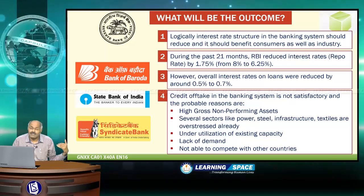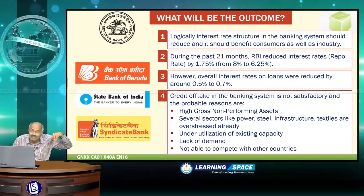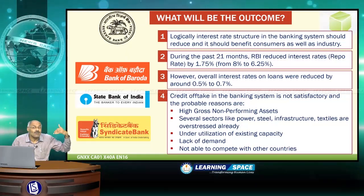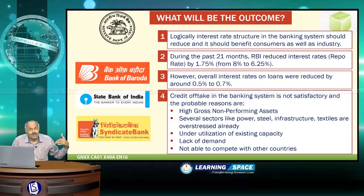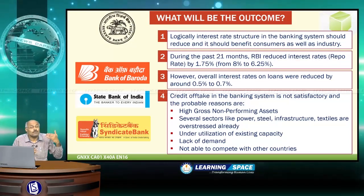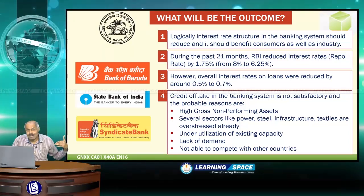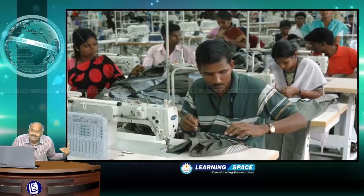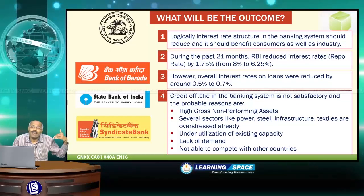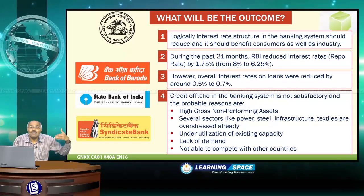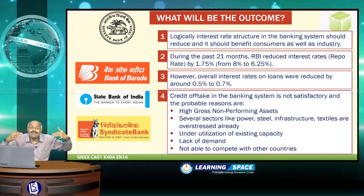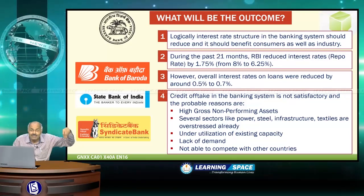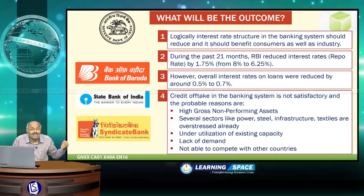Credit offtake in the banking system is not satisfactory. In spite of reduction in interest rates, credit is not taking off. The probable reasons are high non-performing assets — public sector banks especially are suffering. Several sectors like power, steel, infrastructure, and textiles are overstressed, facing the heat of slowdown in the global economy. At the same time, there are structural bottlenecks such as environmental issues and coal linkages. Other reasons include underutilization of existing capacity, lack of demand, and inability to compete with other countries. These are the reasons why credit is not taking off.